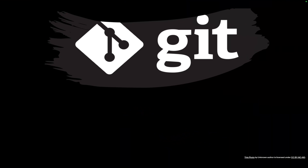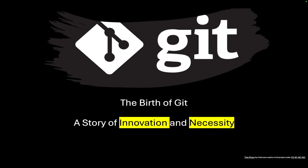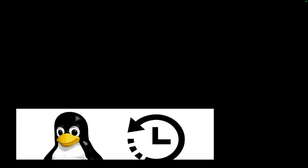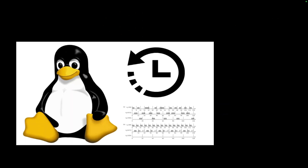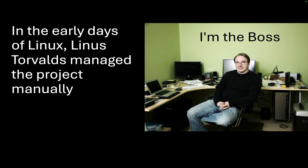In this video, we are diving into the fascinating story behind the creation of Git, the version control system that revolutionized software development forever. Our journey begins in the 2000s when the Linux kernel project was going on. At that time, the project was completely handled by Linus Torvalds — he used to manage the project manually. Developers sent patches which Linus would review and then integrate. This was a cumbersome process that had to change.